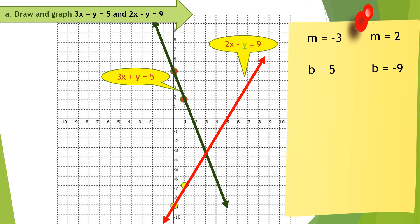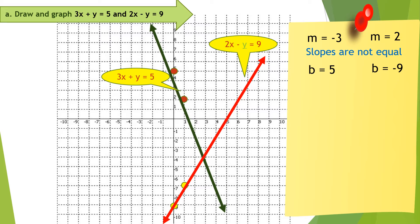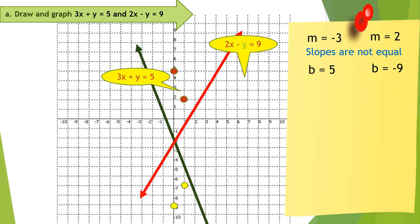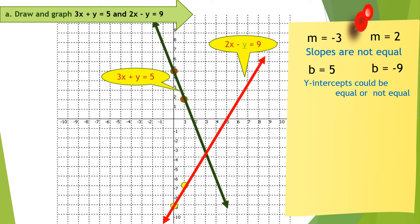Let us now define this type of system of linear equation. If you notice, the slopes are not equal. In this example, the y-intercepts are also not equal, but there are instances where the two lines intersect along the y-axis, meaning the y-intercepts could be equal or not equal. These two lines are called intersecting lines because they intersect at one point, which means an intersecting system has one solution.